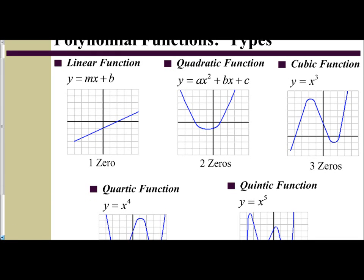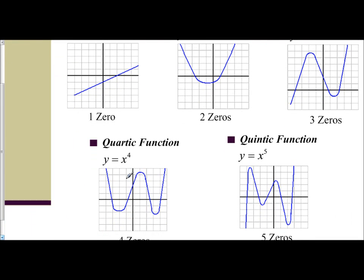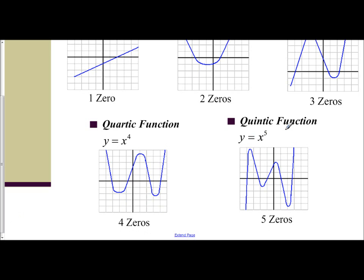We have a quartic function and we see this one we have one, two, three, four zeros. A quintic function we have five zeros. And so we need to connect the number of zeros to the type of function: quintic for five, quartic for four.